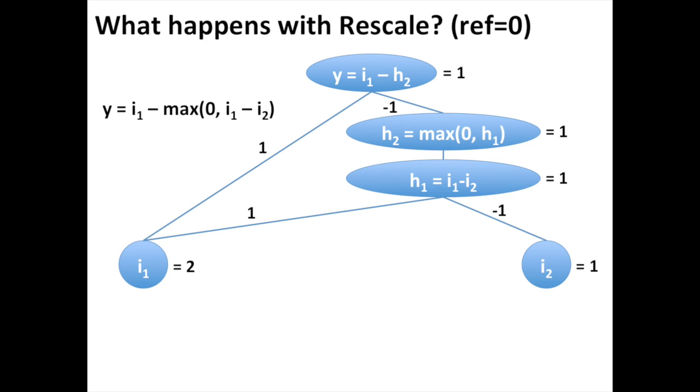What happens if we use the rescale rule to assign contributions? Assume we use a reference of 0 for both i1 and i2. This gives delta i1 equals 2 and delta i2 equals 1. We then, through forward propagation, get delta h1 equals 1 and delta h2 equals 1, and finally delta y equals 1.